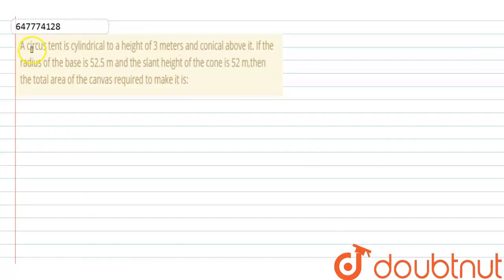Hello everyone, let's start the question. The question says, a circus tent is cylindrical to a height of 3 meter and conical above it. If the radius of the base is 52.5 meter and the slant height of cone is 52 meter, then we need to find the total area of the canvas.